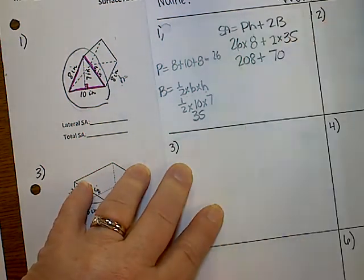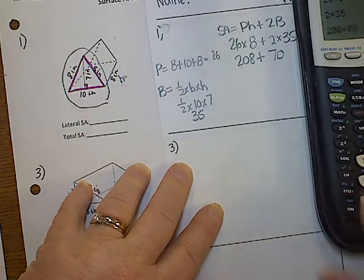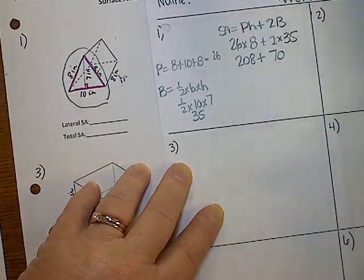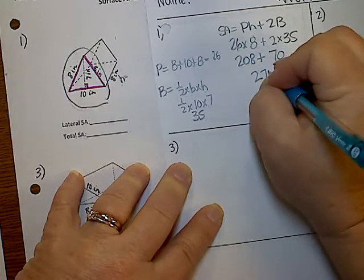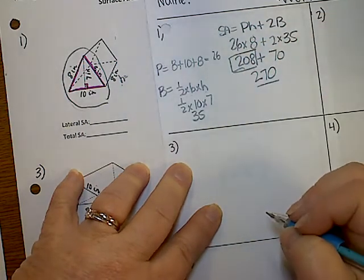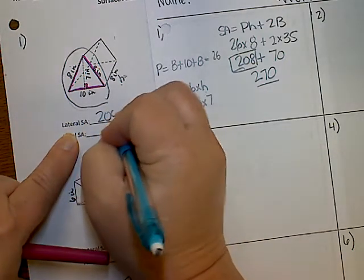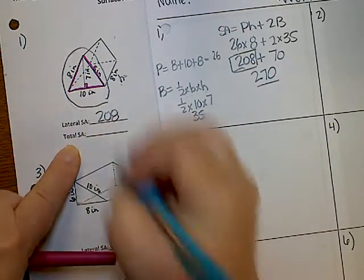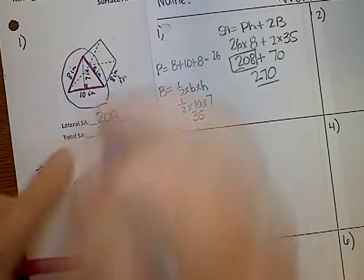And I find out that that's 208 plus 2 times 35. And I get 70. Add 208 and 70. 208 plus 70. And I get 270 for total. And then remember your lateral is the number before the plus sign. So my lateral is 208. And my total is 270, okay?